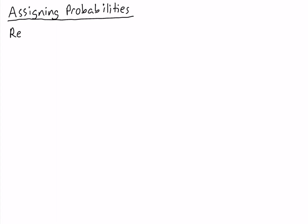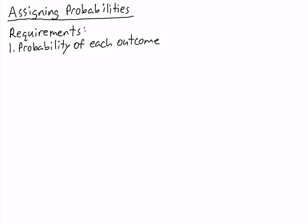There are two requirements for assigning probabilities. The first requirement is that the probability of each outcome is between 0 and 1. We can write that as: the probability of outcome E_i is between 0 and 1, for all i.